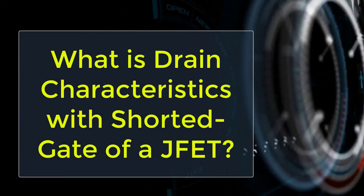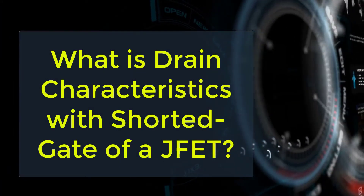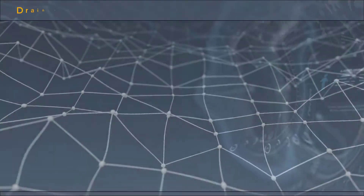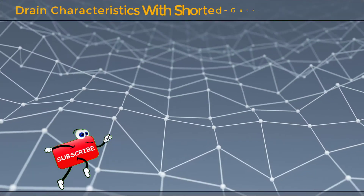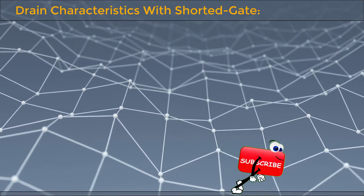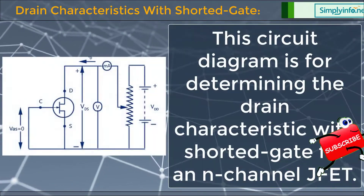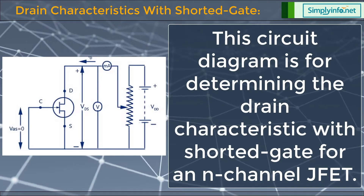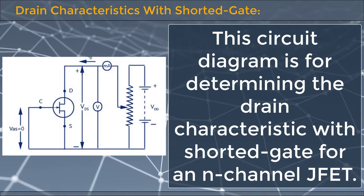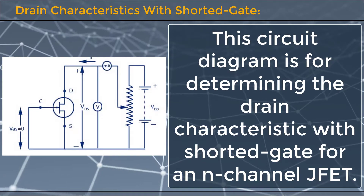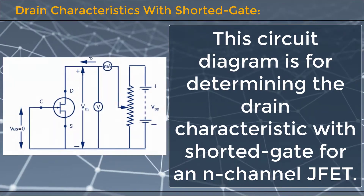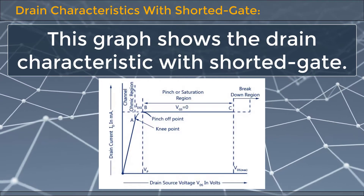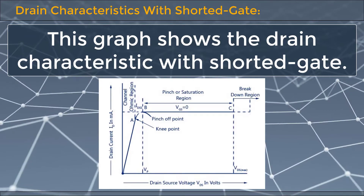What is drain characteristics with shorted gate of a JFET? The circuit diagram is for determining the drain characteristic with shorted gate for an n-channel JFET. This graph shows the drain characteristic with shorted gate.